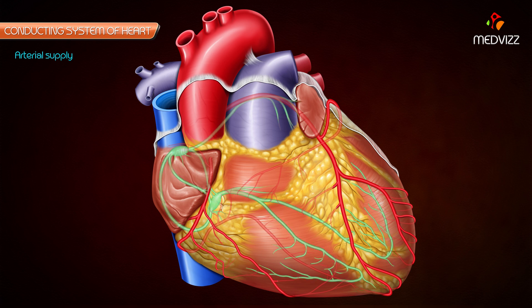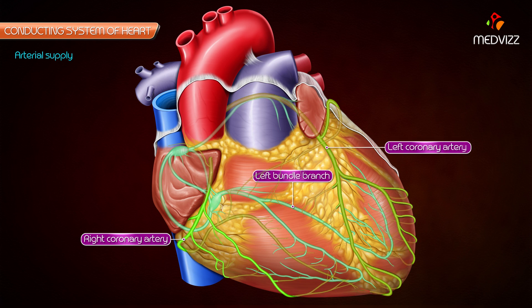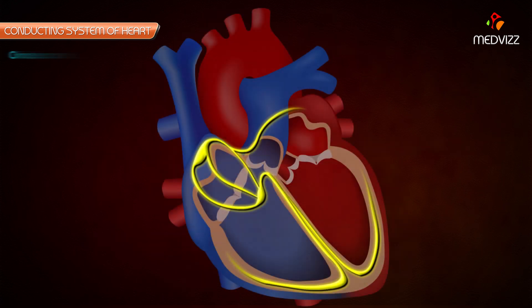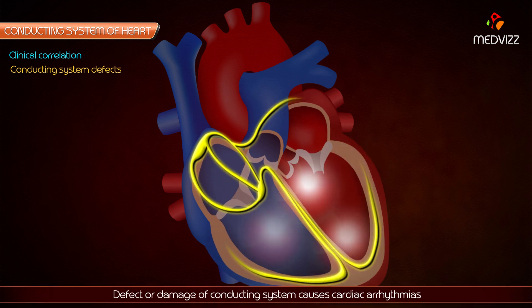The arterial supply of the conducting system: the whole of the conducting system of the heart is supplied by the right coronary artery, except a part of the left branch of the AV bundle which is supplied by the left coronary artery.